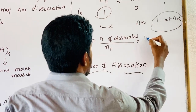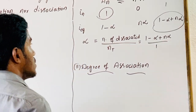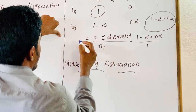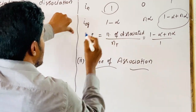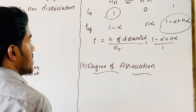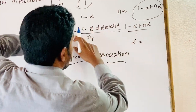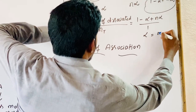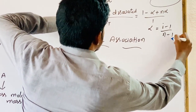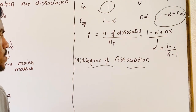The Van't Hoff factor i equals (1 minus alpha plus n alpha). From this, we can derive that alpha equals (i minus 1) divided by (n minus 1). This gives us the degree of dissociation alpha in terms of the Van't Hoff factor i and the number of particles n formed upon dissociation.